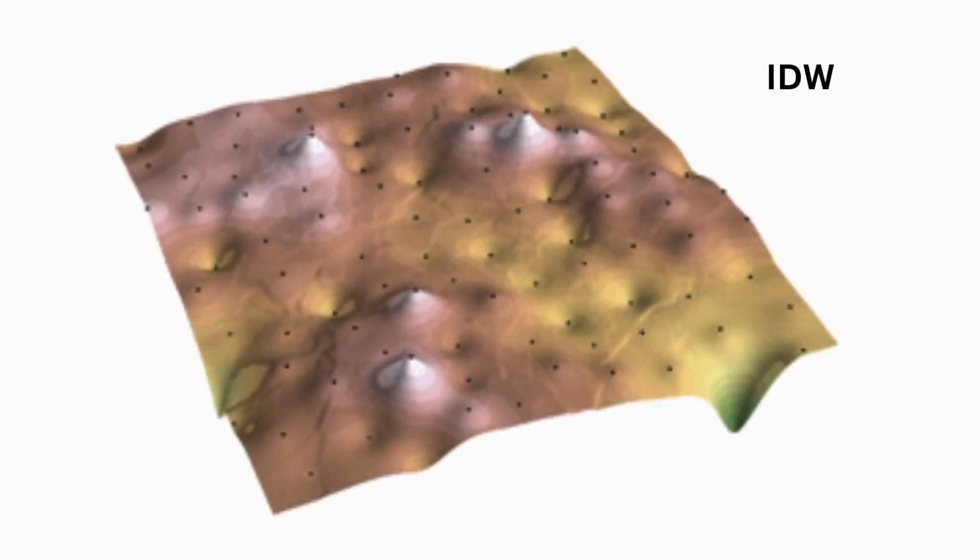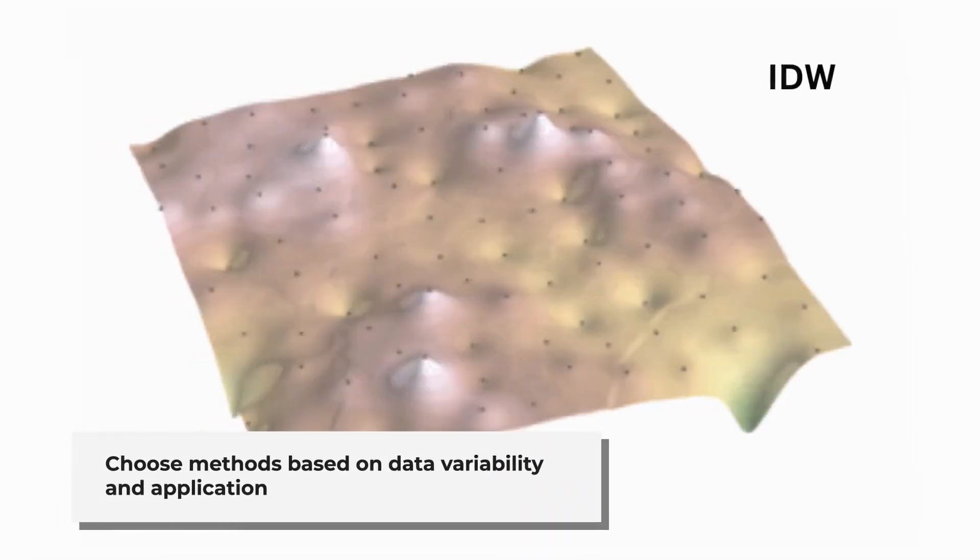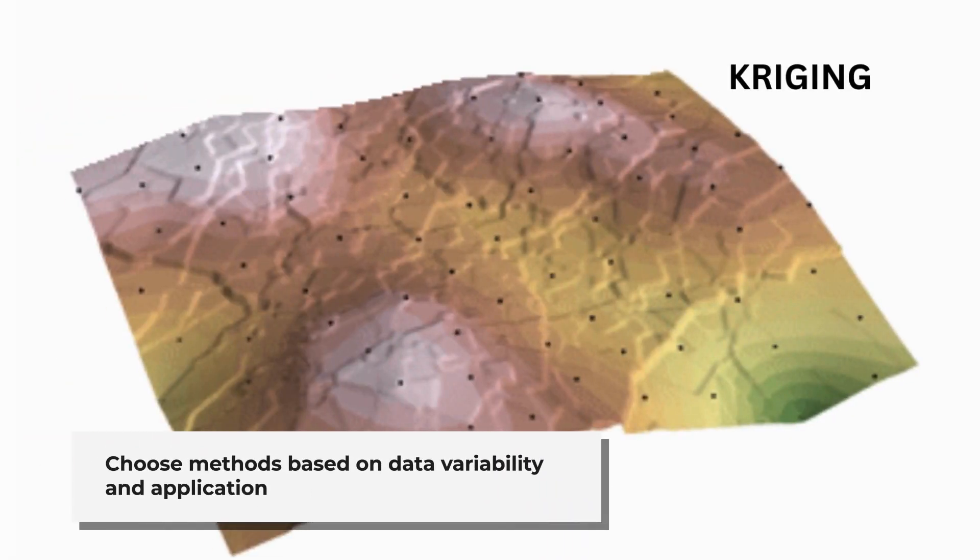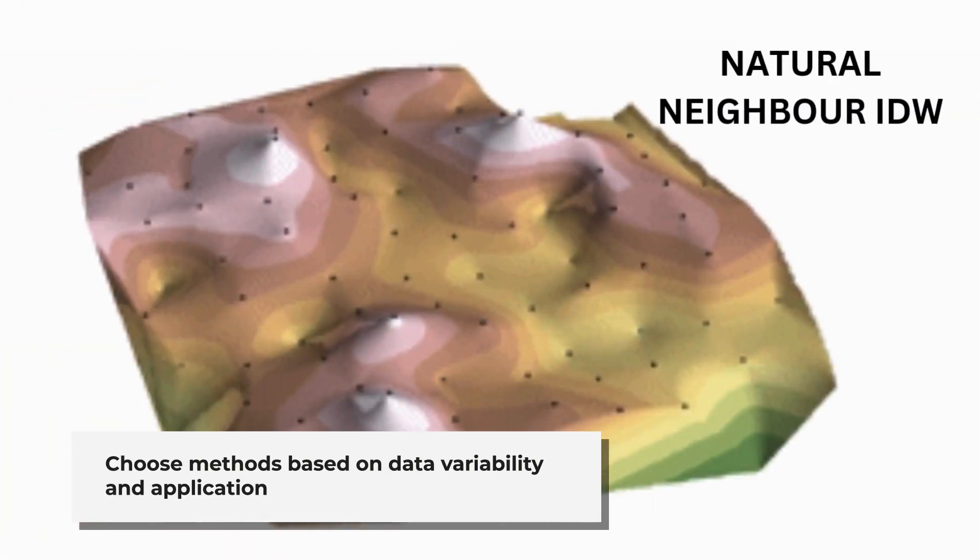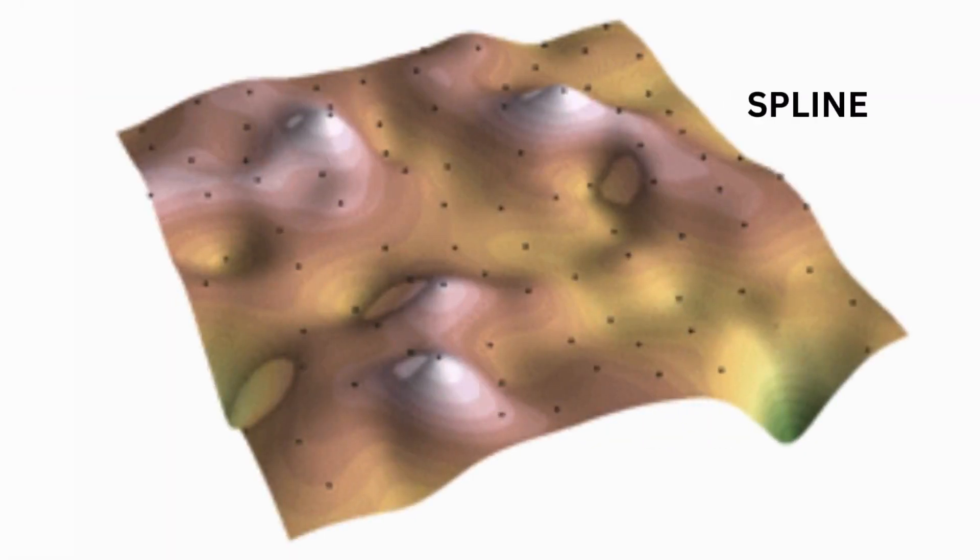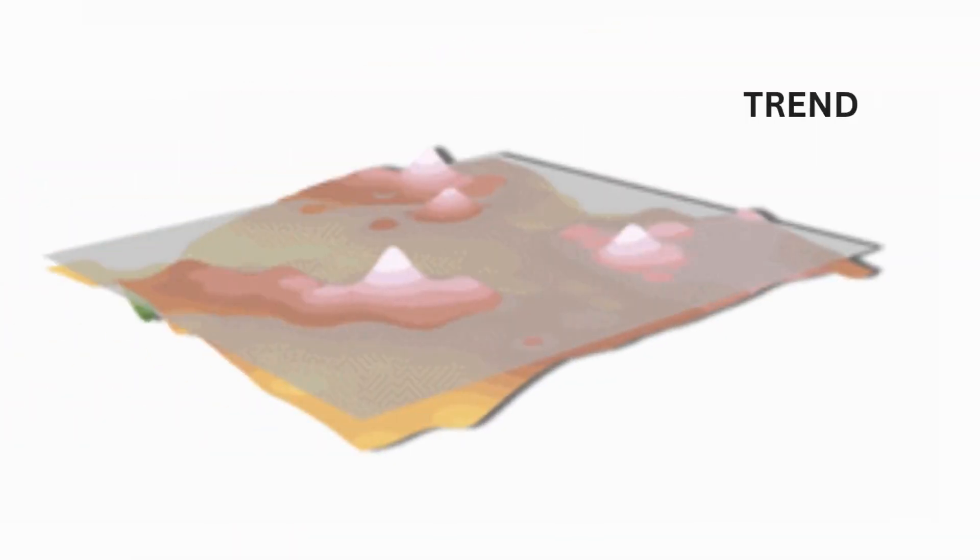Use of interpolation in GIS: So, how do we use these methods in GIS? Interpolation is widely used for tasks like building elevation models, creating weather maps, or estimating pollution levels. Which method you pick depends on your data.